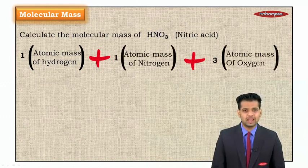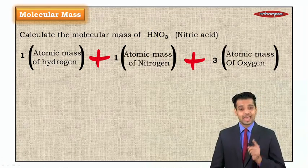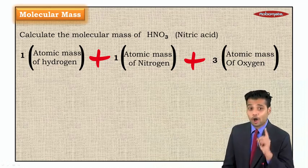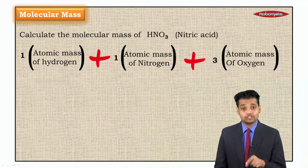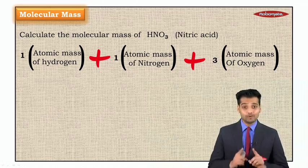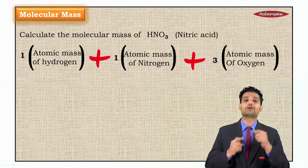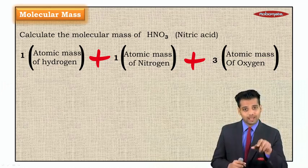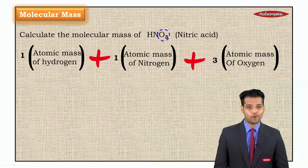Sir, but I'll end up with five. You're wrong. Hydrogen has the atomic mass of one. Oxygen has the atomic mass of 16 and nitrogen has 14. So we don't have to add one plus one plus three but we have to add one into atomic mass of hydrogen plus one into atomic mass of nitrogen plus three into atomic mass of oxygen.